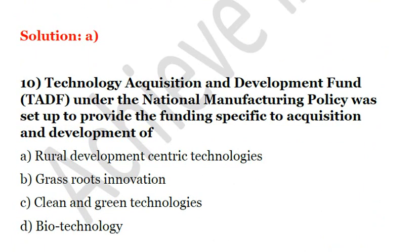The 10th question: Technology Acquisition and Development Fund under the National Manufacturing Policy was set up to provide funding specific to acquisition and development of — A. rural development-centric technologies, B. grassroots innovation, C. clean and green technologies, D. biotechnology. The answer is clean and green technologies. The Technology Acquisition and Development Fund under the National Manufacturing Policy aims to provide funding specifically for the acquisition and development of clean and green technologies. Solution is C.